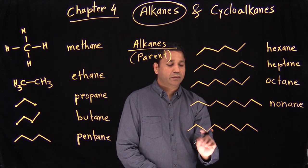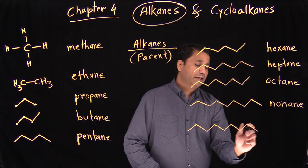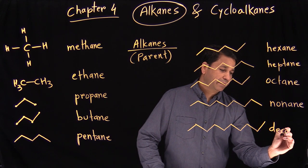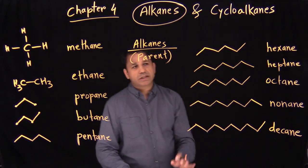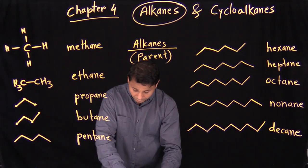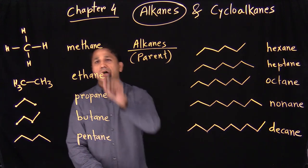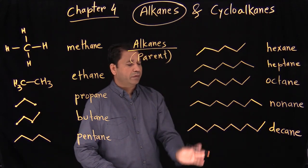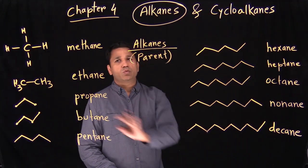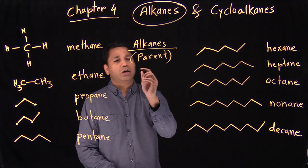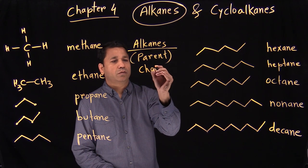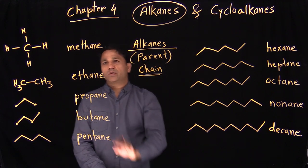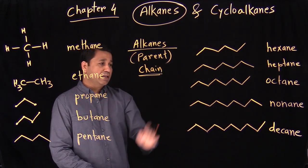So these are the different parent alkanes we absolutely have to know — one through ten. One carbon is methane, ethane, propane, butane, all the way to decane. There are more than ten, but we will stop at decane. That's your parent chain — we'll use it later on. This is a chart where we write down all the alkanes together and you absolutely have to remember all these names.